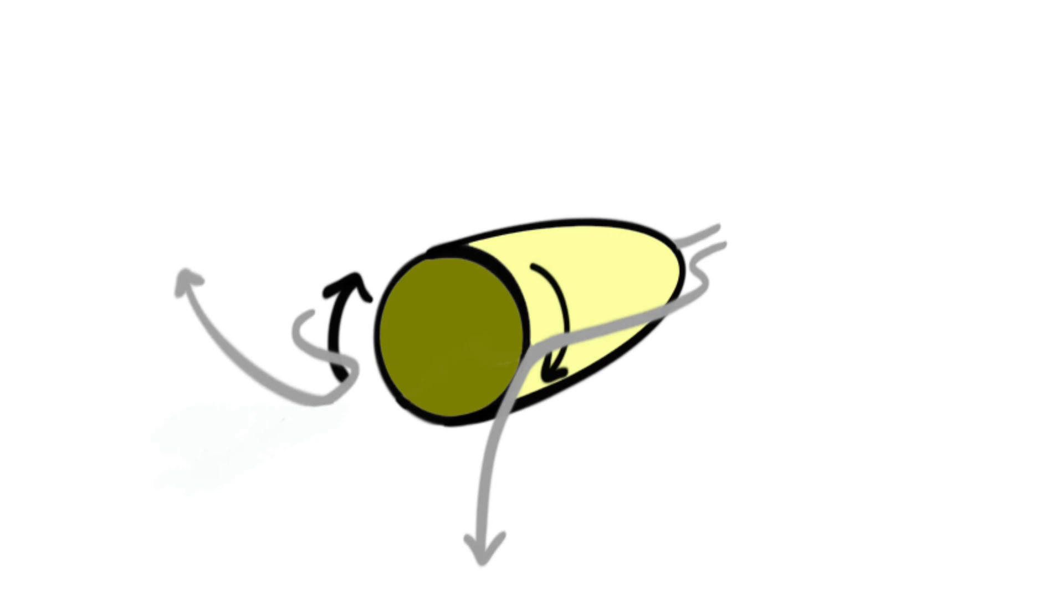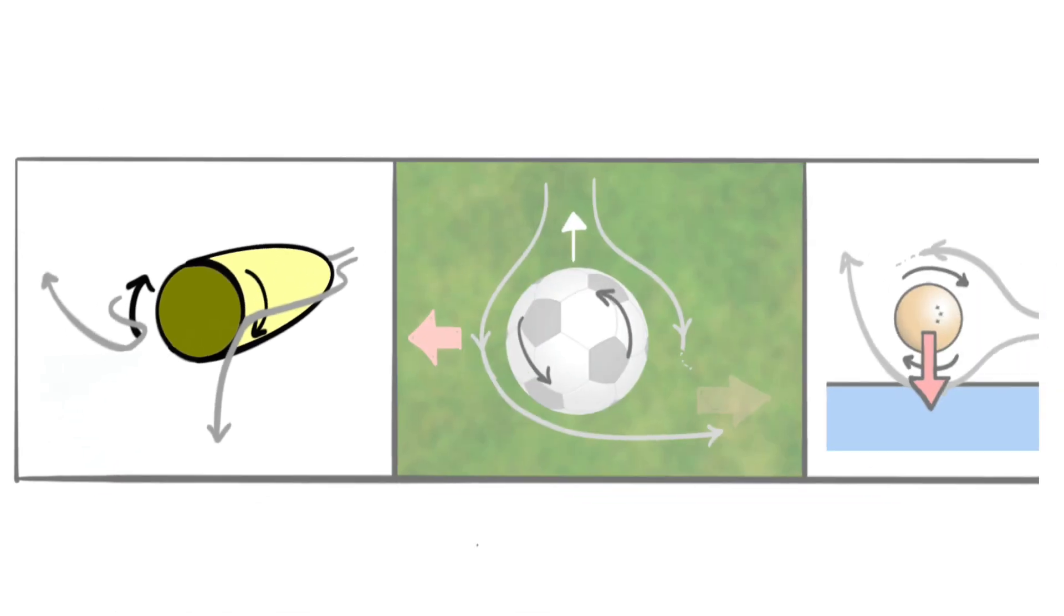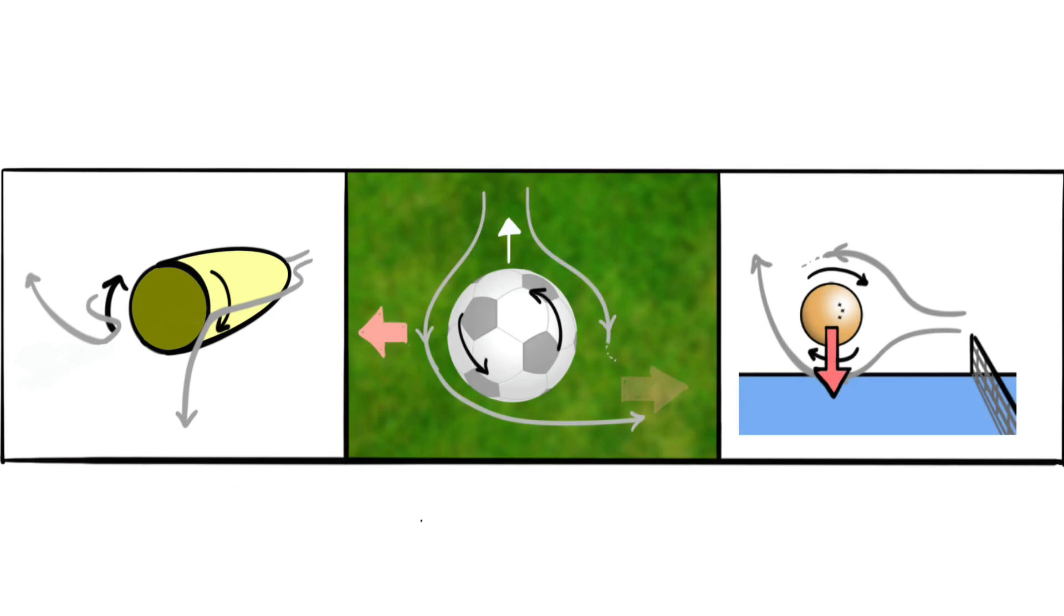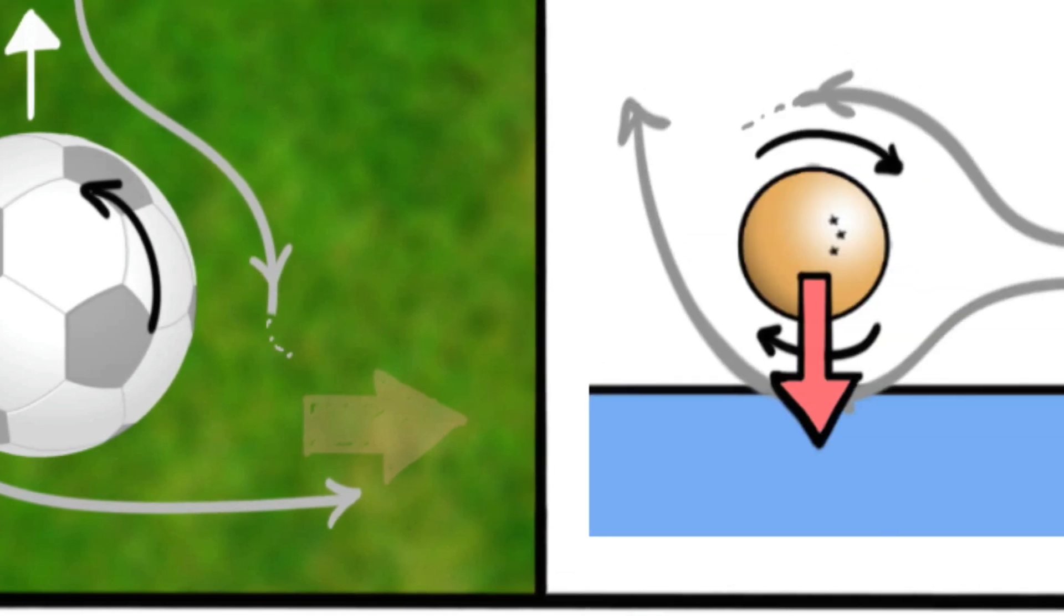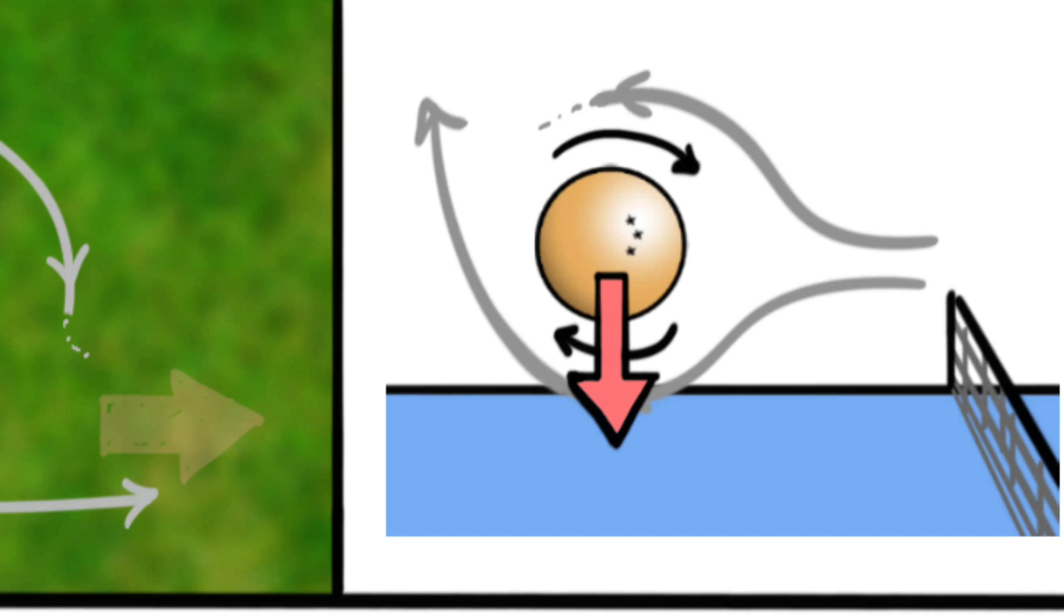But why is that happening? Well, let's go back and compare it with the case of the football and the ping pong ball. See, in the case of the football, we could find one side moving in the same direction as the air, causing it to drag along, and the other side moving in the opposite, making it stop. This asymmetry made the Magnus force work. Now the same was the case in the ping pong ball. We could find one side of the ball moving in the same direction as the air, dragging it along, and the other side making it stop. The asymmetry caused the Magnus force.